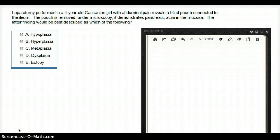In this question, laparotomy is performed in a four-year-old Caucasian girl with abdominal pain and reveals a blind pouch connected to the ileum.